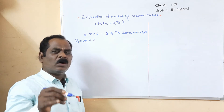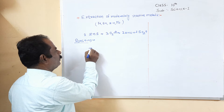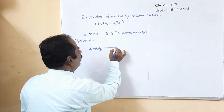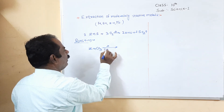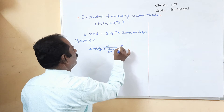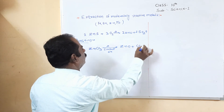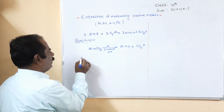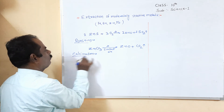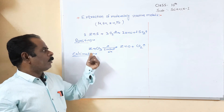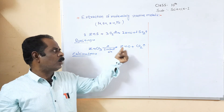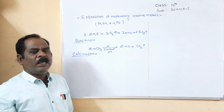If the metal occurs in carbonate form, for example zinc carbonate (ZnCO3), when this zinc carbonate is heated in limited air, it forms zinc oxide and liberates carbon dioxide gas. This process is called the calcination process. Calcination is defined as: when a metal carbonate is strongly heated in limited air and converted into its oxide, the process is called calcination.